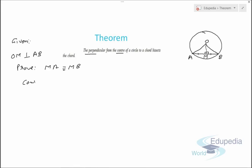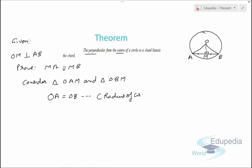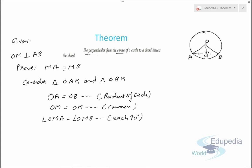Consider triangle OAM and triangle OBM. We can say that OA equals OB because they are the radii of the circle. We can say that OM equals OM as they are the common side. And we can say that angle OMA equals angle OMB, each equal to 90 degrees.